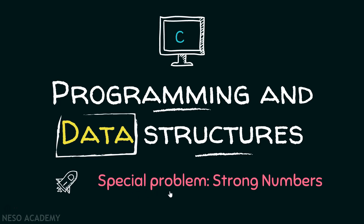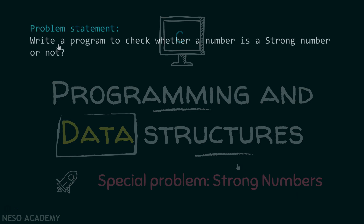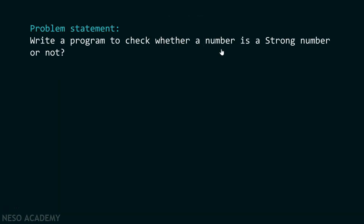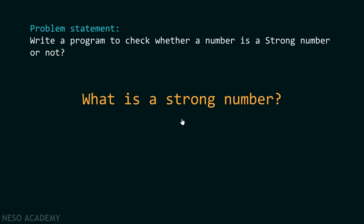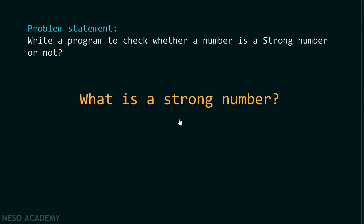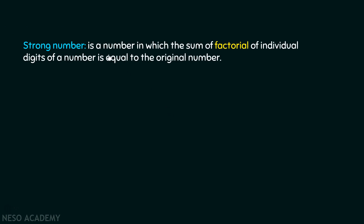Let's consider one special problem related to strong numbers. We need to write a program to check whether a number is a strong number or not. A strong number is a number in which the sum of the factorial of individual digits of a number is equal to the original number.